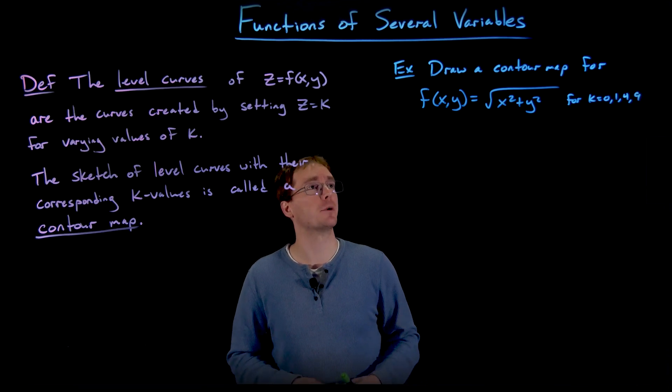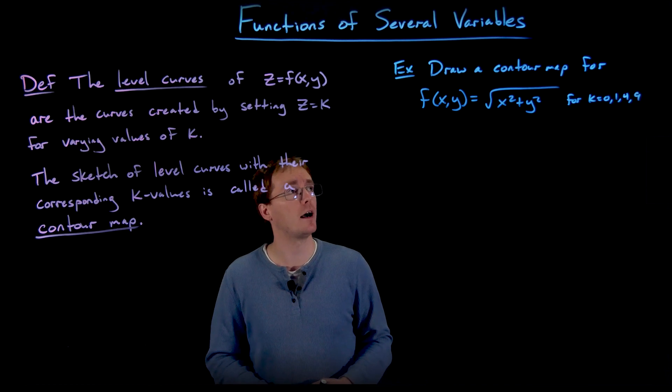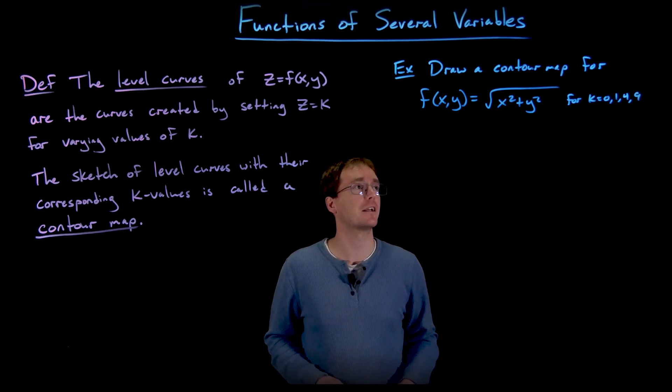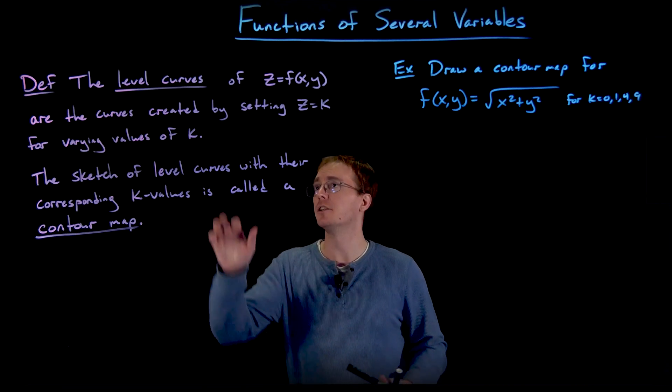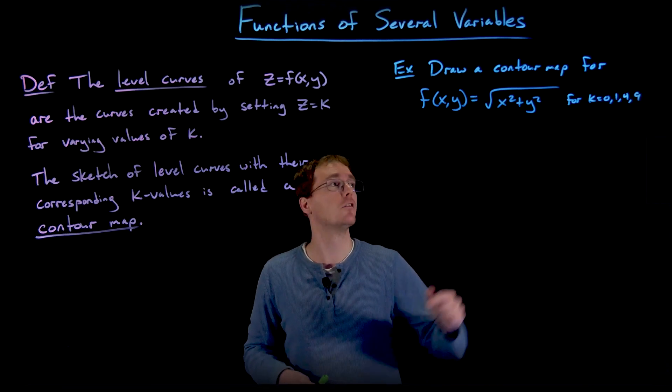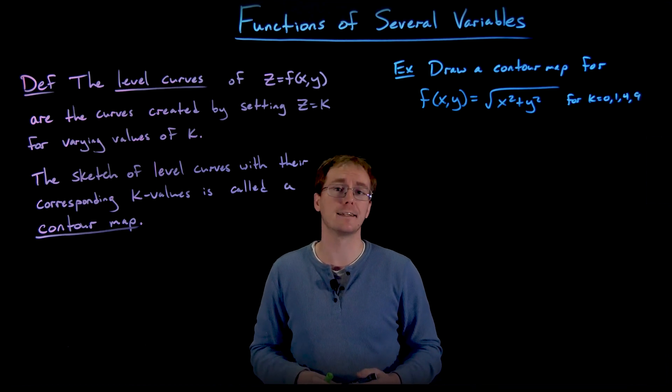And so the function of two variables that we're interested in creating this contour map for is f(x,y) = √(x² + y²). And we're going to create this contour map using these varying level curves for these given k values of 0, 1, 4, and 9.